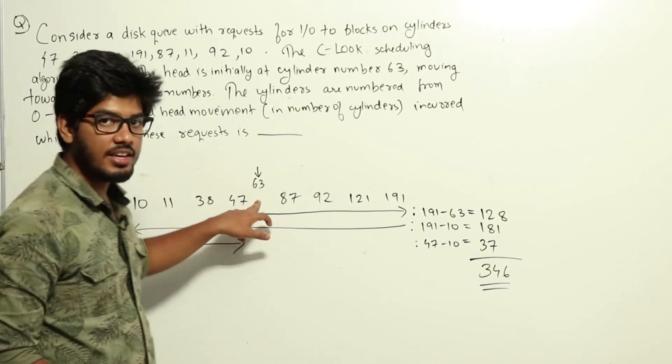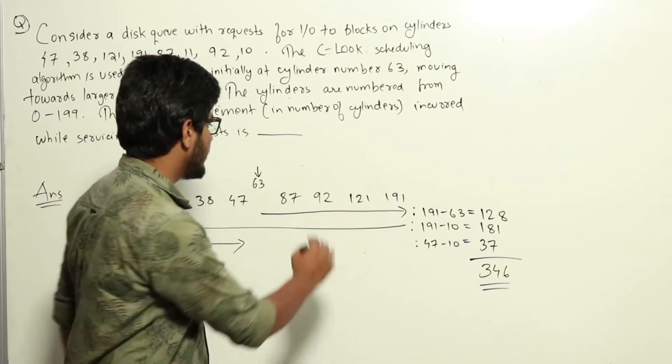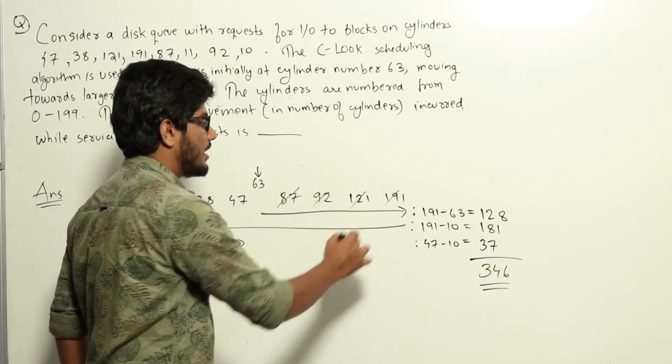So we start from 63, we move to 191. By that time we will cover 87, 92, 121, and 191.